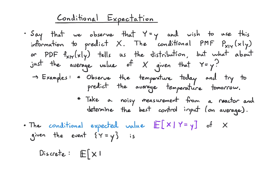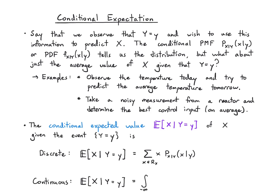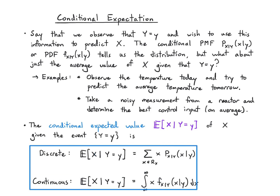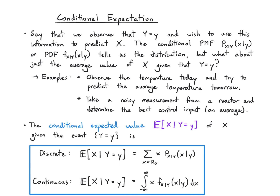In the discrete case, we define this to be the sum over x times the conditional PMF of x given y. And in the continuous case, we just replace that sum with an integral. So on one hand it's very straightforward — all we're doing is taking an average, except instead of the marginal PMF or PDF, we have the conditional PMF or PDF.